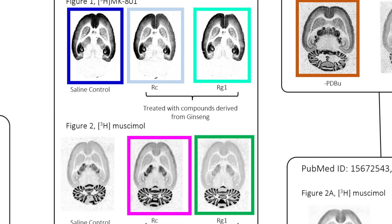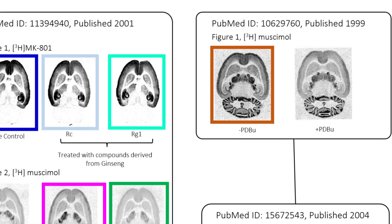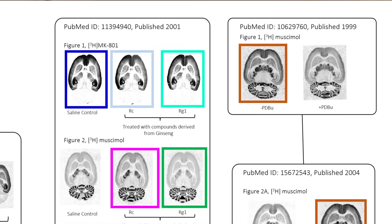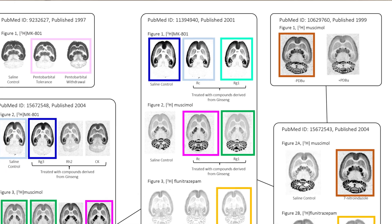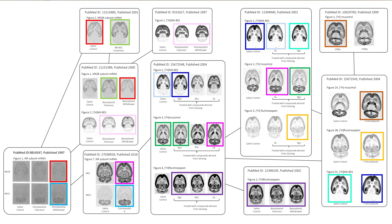Some of these are pixel-perfect matches. Some are slightly different developments or images of the same brain slice. And one or two share unique features that would really strongly indicate that the slices were taken from the same brain, if they're not just a copy or a different exposure of the same slice.